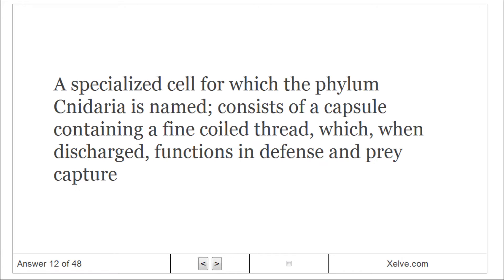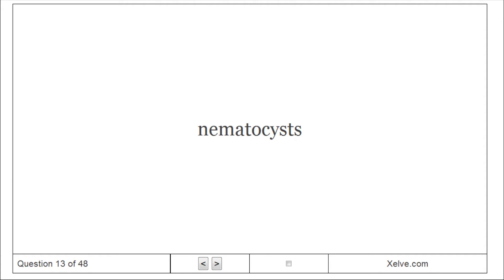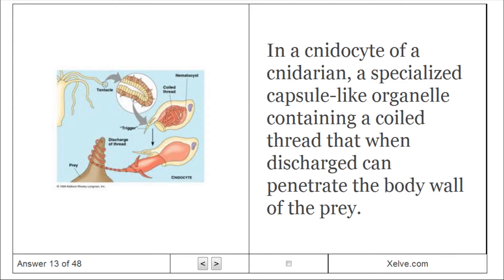Cnidocytes. A specialized cell for which the phylum Cnidaria is named, consisting of a capsule containing a fine coiled thread which, when discharged, functions in defense and prey capture. Nematocysts. In a cnidocyte of a cnidarian, a specialized capsule-like organelle containing a coiled thread that, when discharged, can penetrate the body wall of the prey.